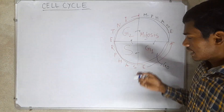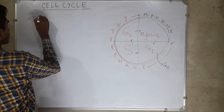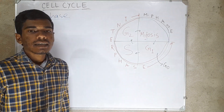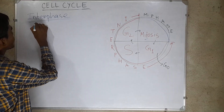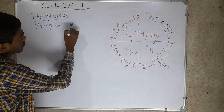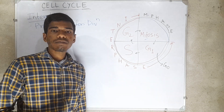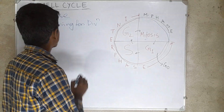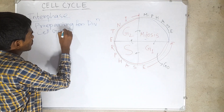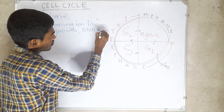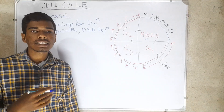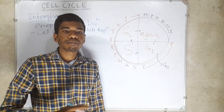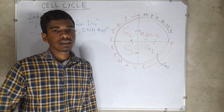Interphase is a phase in which the cell is preparing for division. This is a resting phase in which cell growth and DNA replication occur in an orderly manner. Interphase contains three sub-phases: G1, that means gap phase 1; S phase, or synthesis phase; and G2 phase, that means gap phase 2.